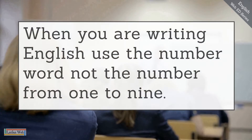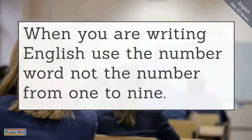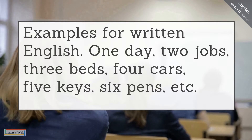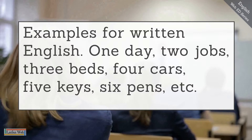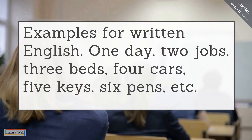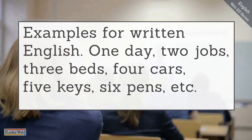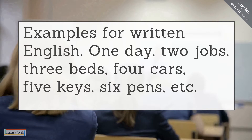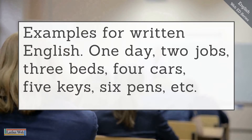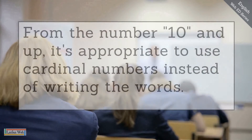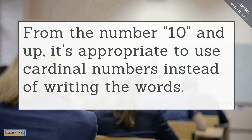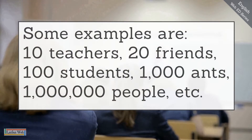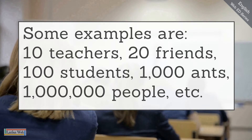When you're writing English, use the number word — not the numeral — from one to nine. Examples for written English: one day, two jobs, three beds, four cars, five keys, six pens, etc. Spell out the word; don't use the singular numeral. From the number ten and up, it's appropriate to use cardinal numbers instead of writing the words. Some examples: 10 teachers, 20 friends, 100 students, 1,000 ants, 1 million people.